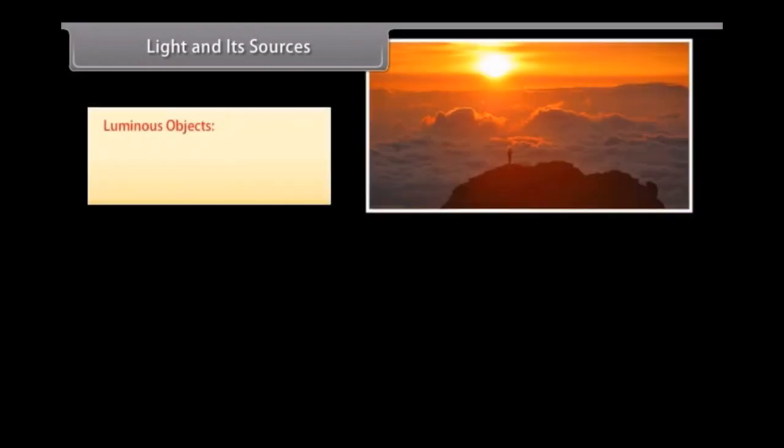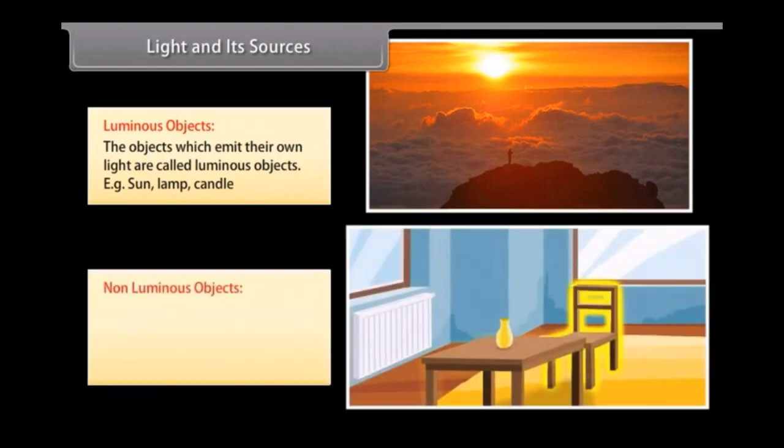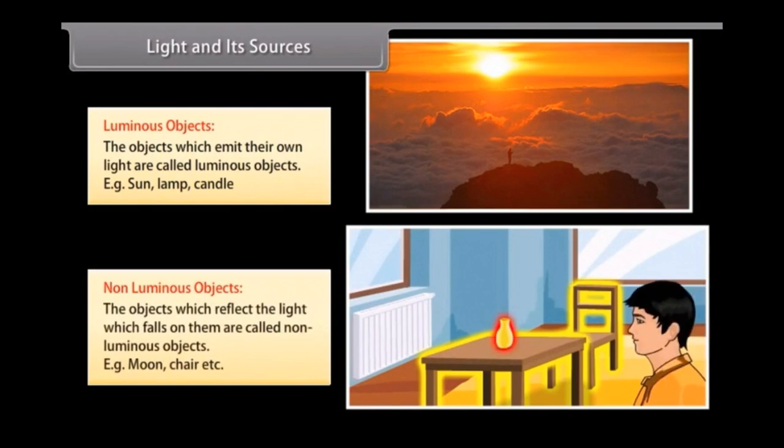Luminous objects are objects which emit their own light, for example sun, lamp, candle. Non-luminous objects are objects which reflect the light which falls on them, for example moon, chair, etc.